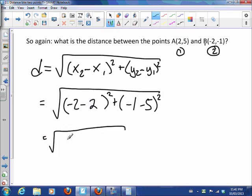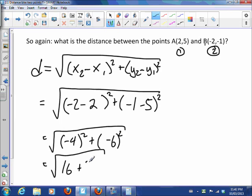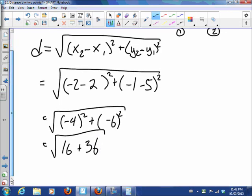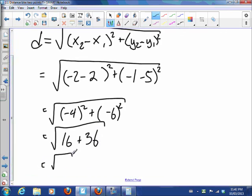So that's the square root of negative 4 squared plus negative 6 squared. And we know that negative 4 squared is still just 16. Negative 6 squared is still just 36. So that's the square root of 52, which we remember from our example is about 7.21 units.